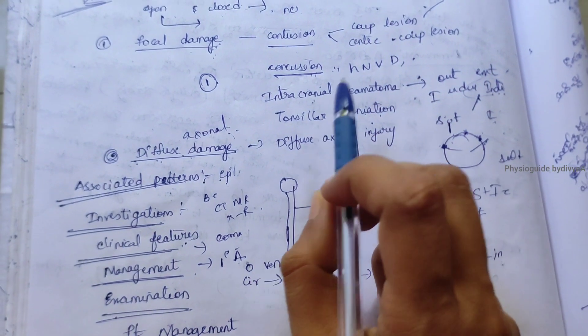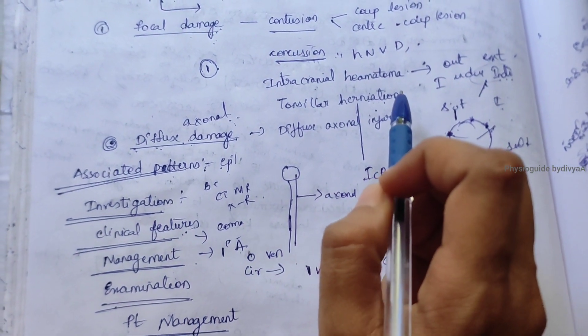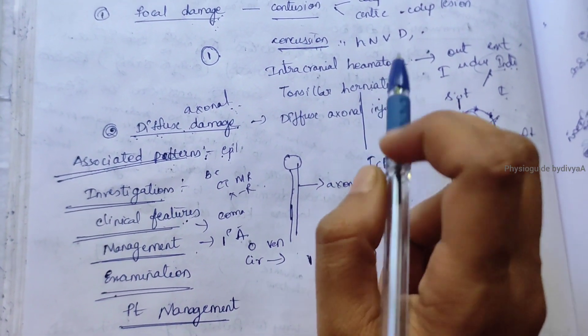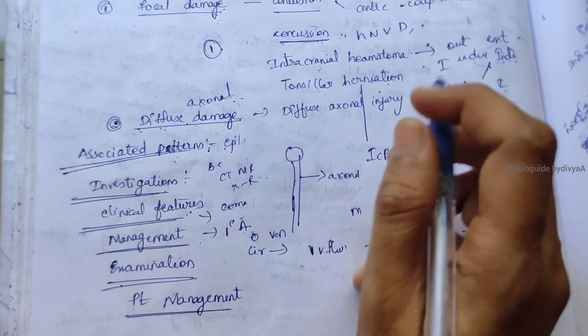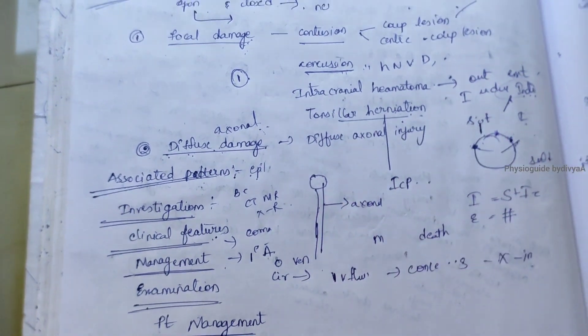Tonsillar herniation includes supratentorial hematoma, lateral tentorial herniation, and central tentorial herniation. As a result, the brain stem will be damaged.